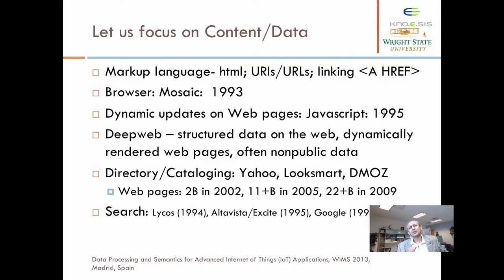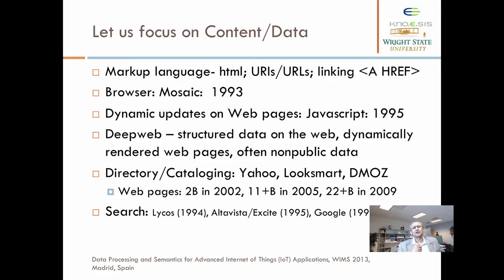If you had thousands or hundreds of thousands of web pages, finding information is one thing. If you have billions of web pages, you need a different approach. The initial technology to help you find information was web directories or web cataloging technologies. The best known name in that field was Yahoo. At one point Yahoo reportedly had around nine to ten thousand people working purely to catalogue web pages.